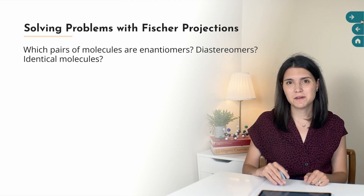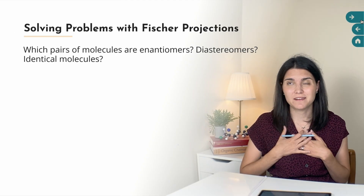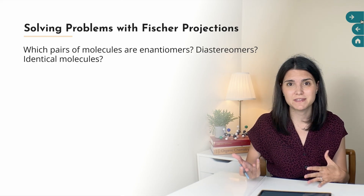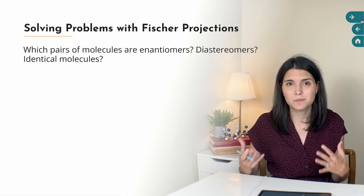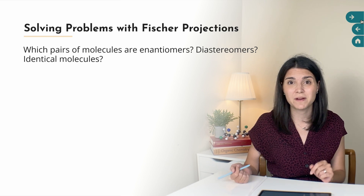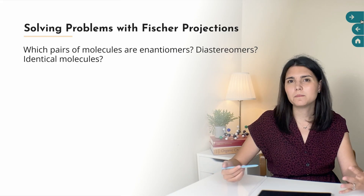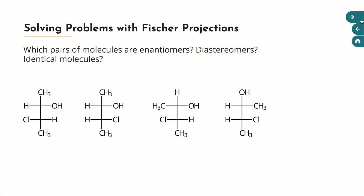Now, a really common exam-style problem is to give you a bunch of Fischer projections and ask you about the relationship between them — are these two enantiomers, are these two diastereomers, are they identical, are any of them meso compounds? In this section of the video, I'm going to give you some tips about how to approach these types of problems.